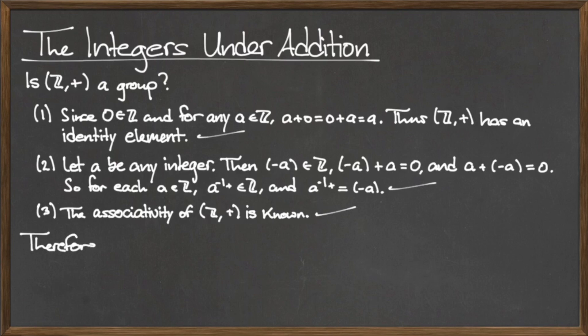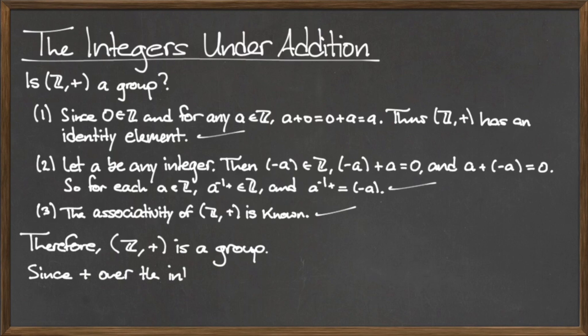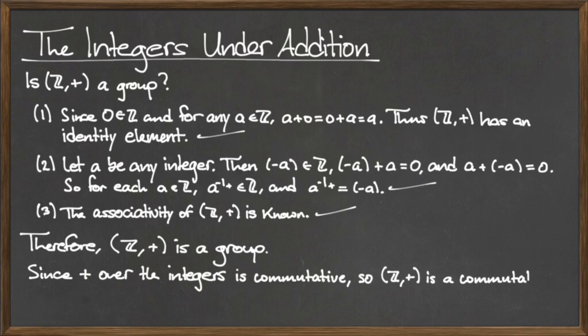Since the set of integers under addition satisfies the identity, inverse, and associativity requirements, the integers under addition is a group. Also, we have previously stated that addition of integers is also commutative, which means that the set of integers under addition is a commutative, or abelian, group.